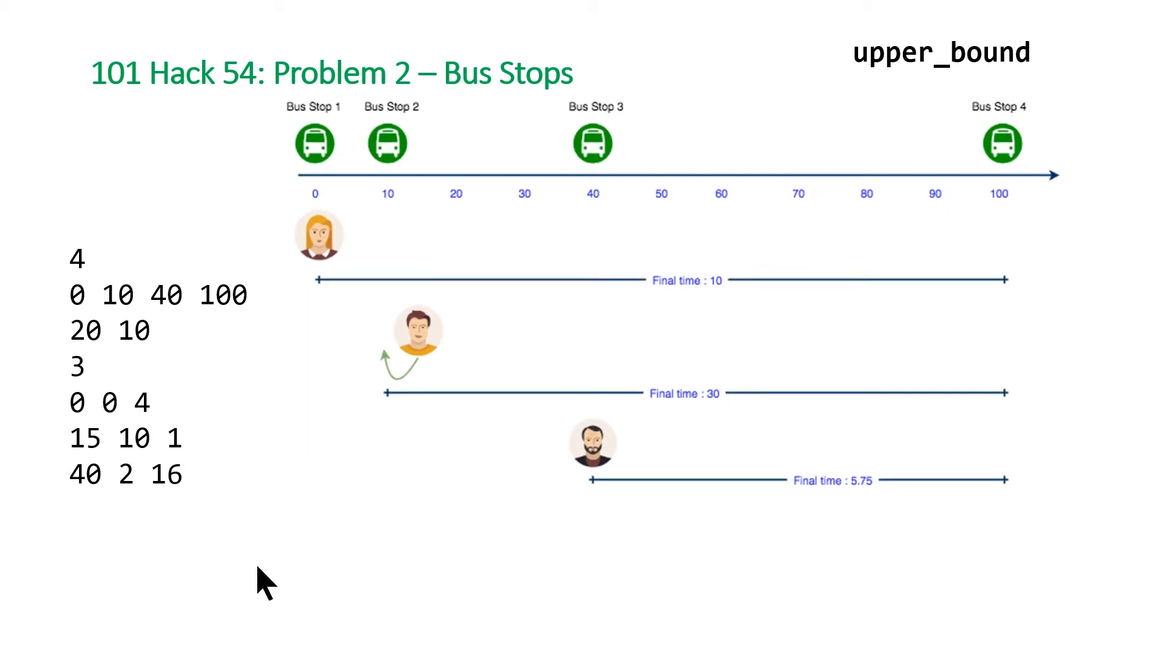There's three things that we need to calculate in order to calculate that time. The first one is the time to walk to the bus. For the first individual looking at bus stop one that's just going to be zero, but we can calculate this by taking the absolute difference of the starting position and the bus stop divided by the speed s at which the individual can walk.